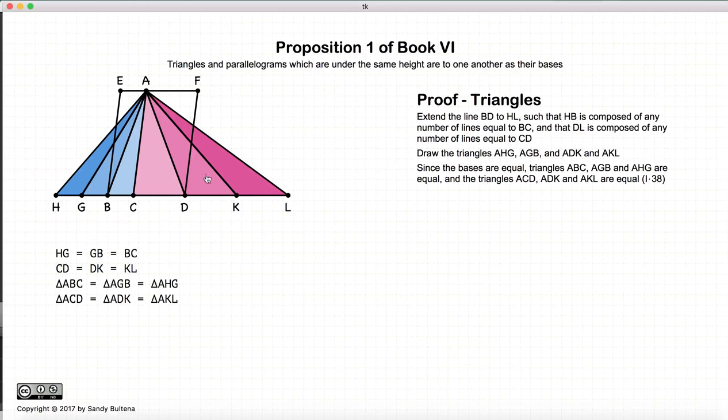Likewise, let's look at all these pink triangles. The base is the same for all of them. The height is the same for all of them. So again, Proposition 38, Book 1 states that the areas are all equal. So these blue triangles are equal to each other and these pink triangles are equal to each other in area.